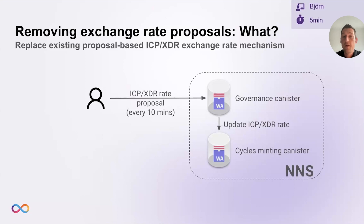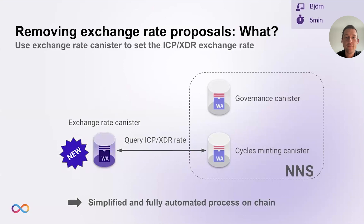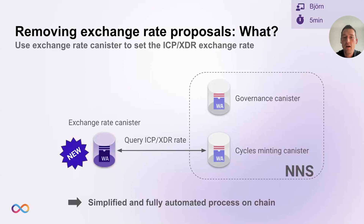Now we can do that simpler. We can use the exchange rate canister — the cycle-minting canister can directly talk to it on a periodic basis. I think it's foreseen to do that every five minutes to get the ICP-XDR exchange rate back. So there are no proposals needed to fulfill that action. It's a simplified and fully automated process, completely on-chain.